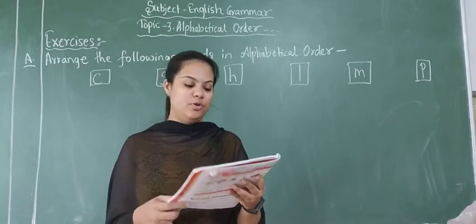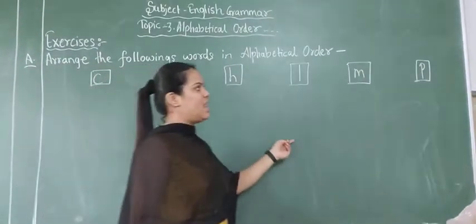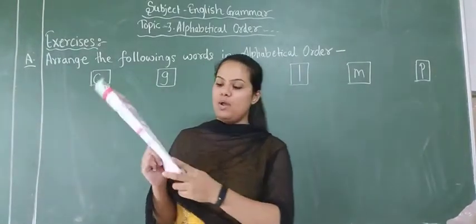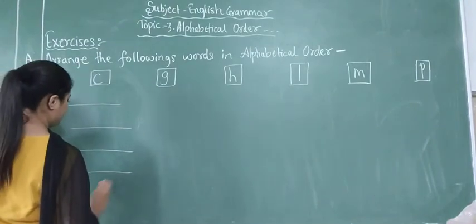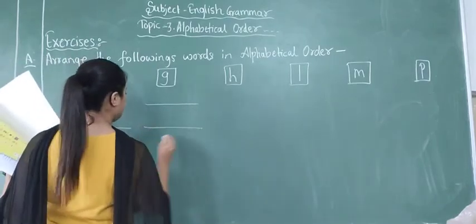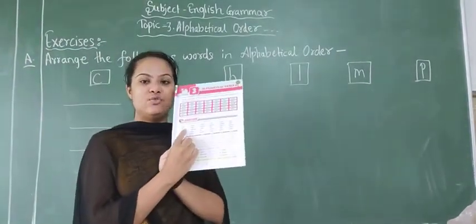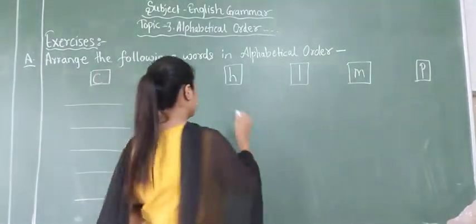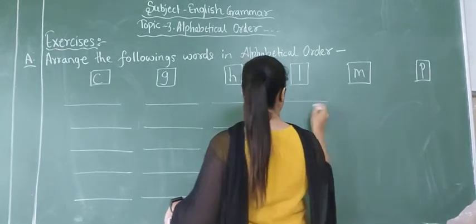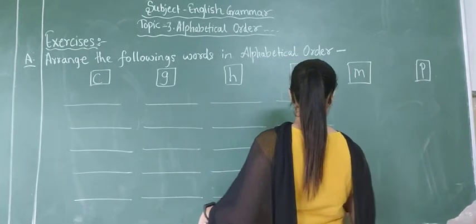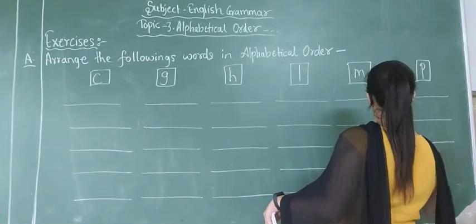Here is exercise portion A: arrange the following words in the alphabetical order. So how you arrange these all words? You have to arrange from letter C, letter G, H, L, M, P. You have to write five words for each letter from options given. See the first letter and write down in the correct box.